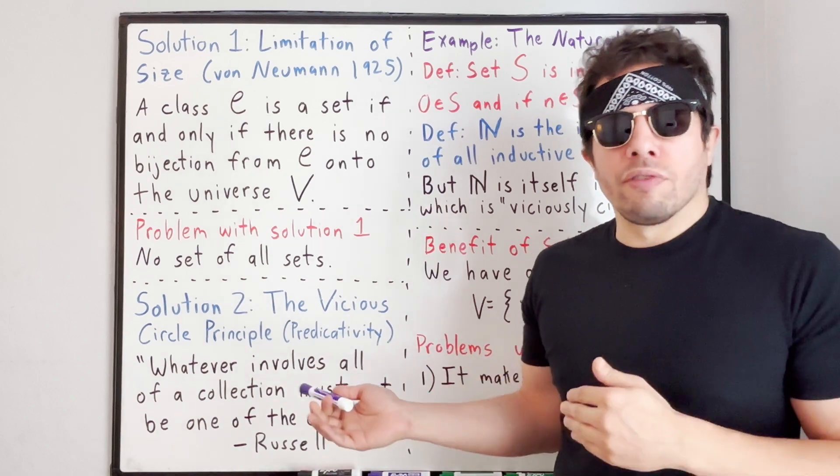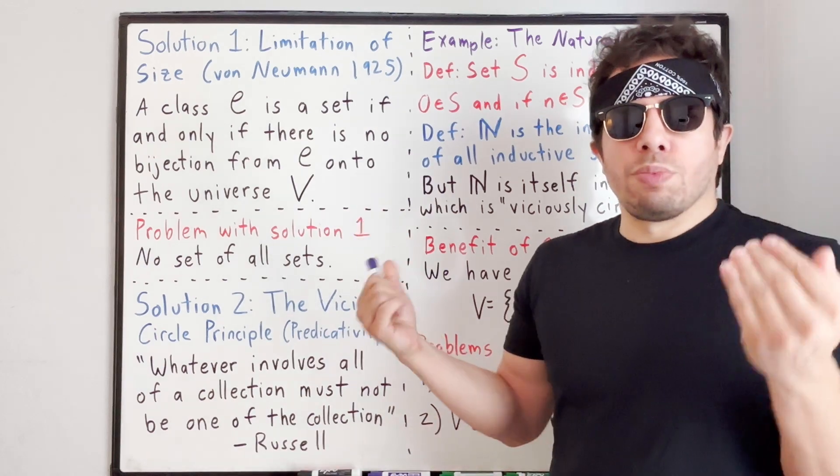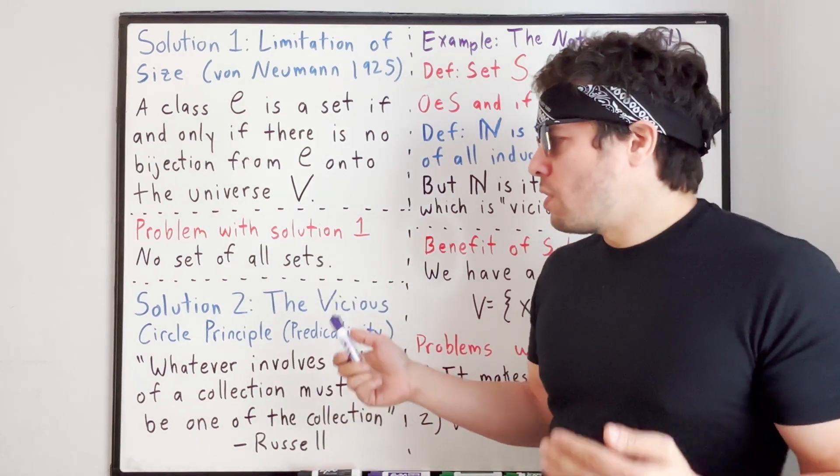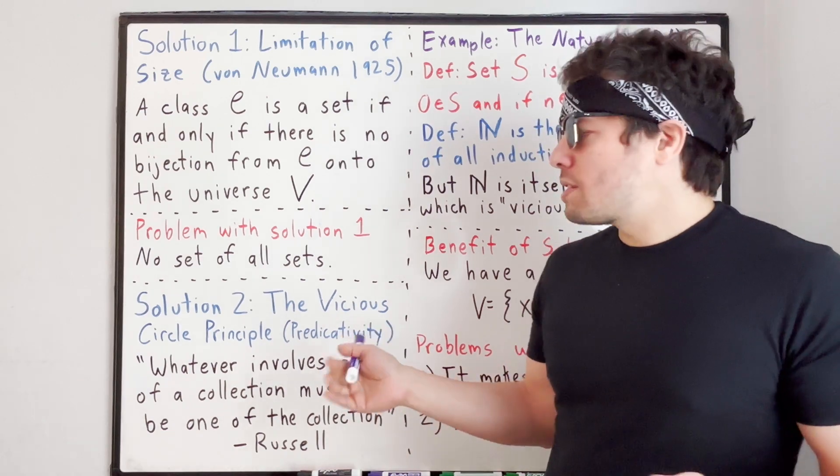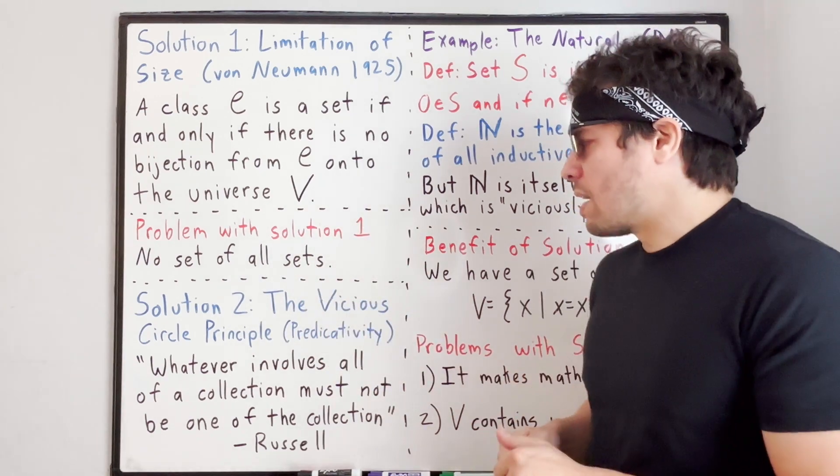The idea is that the set of all sets amounts to the universe of all sets, and clearly there's a bijection from the universe of all sets onto the universe of all sets. So the universe of all sets becomes a proper class. So we cannot discuss a set of all sets. We can't discuss a set of all sets that don't contain themselves, and so we avoid Russell's paradox that way.